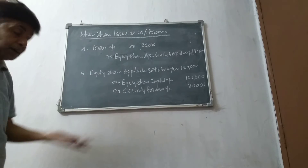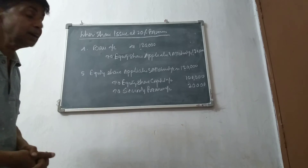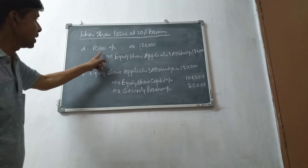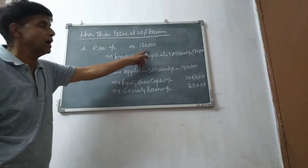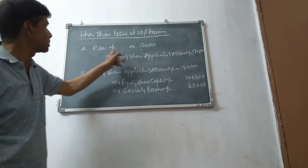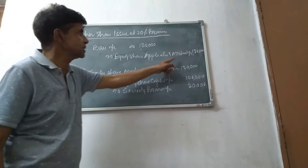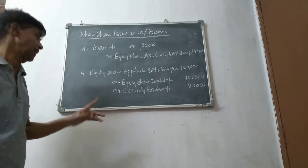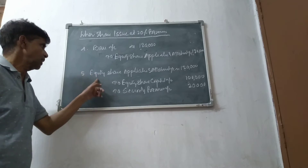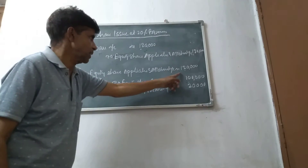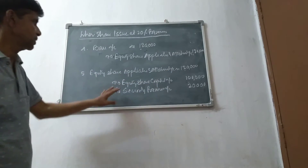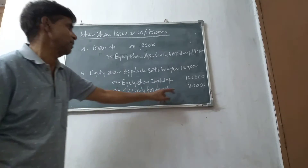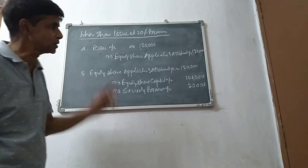So, Bank Account is debited, to Equity Share Application and Allotment Account, 1,20,000. Equity Share Application and Allotment Account, to Equity Share Capital Account, 1,00,000, and to Securities Premium Account, 20,000.